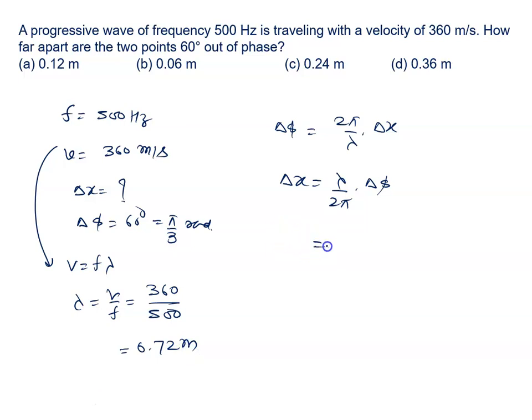So lambda is 0.72 meter. Delta x equals 0.72 meter upon 2pi, delta phi is pi by 3. Pi cancels with pi, 3 to 6 and 2 to 7, 6 to 72, so it is 0.12 meter.